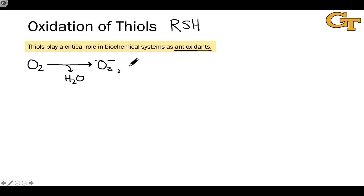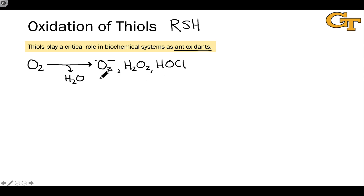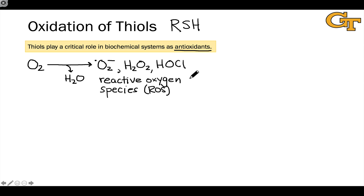The superoxide anion is O2 with an additional electron. Other reactive species include hydrogen peroxide (H2O2) and hypochlorous acid (HOCl). All of these contain oxygen that remains electrophilic and remains reactive, and they're called collectively reactive oxygen species, or ROS for short.